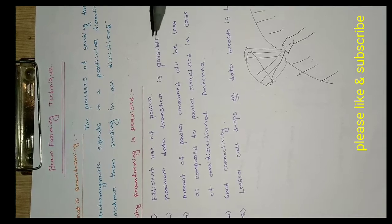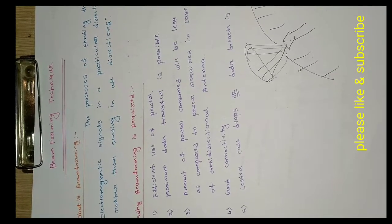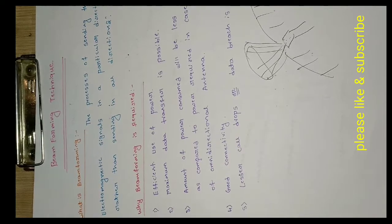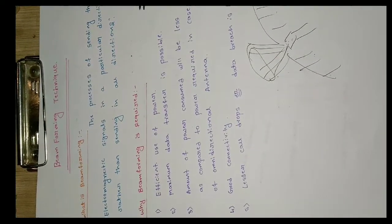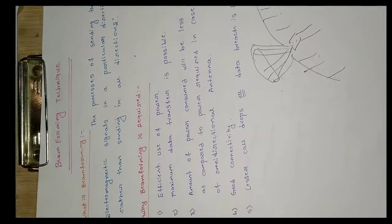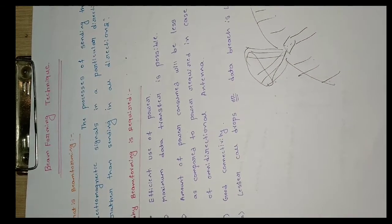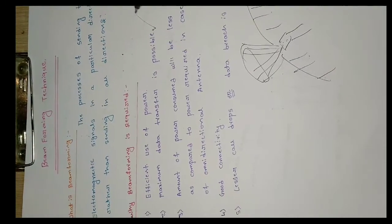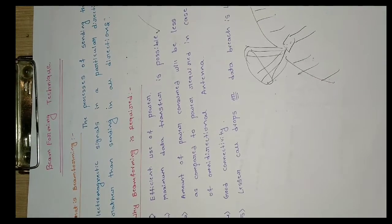Now why is beamforming required? The first reason is efficient use of power. Omnidirectional antennas radiate energy in all directions, consuming more power. With beamforming antennas, the power consumed by the cell tower is less. The second point is maximum data transfer — as the beam continuously points toward a particular user, the signal is stronger, and as signal strength increases, the amount of data transferred also increases.